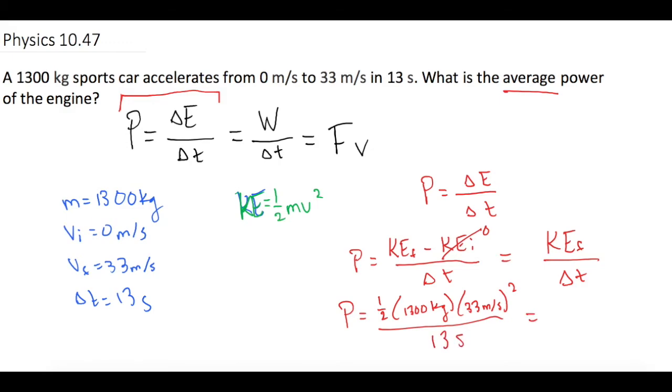So that power gives us 54,450 joules per second. And remember, a joule per second is another way of saying it's a watt. So we have 54,450 watts.